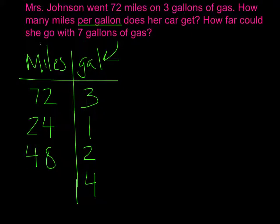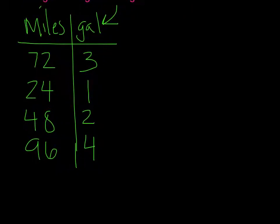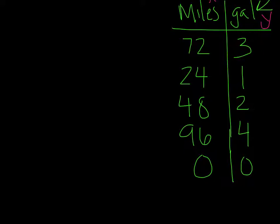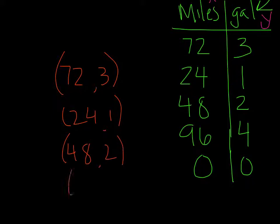Also keep in mind, if I haven't gone anywhere, I haven't used any gallons of gas, or if I haven't used any gallons of gas, I haven't gone anywhere, so I have a 0, 0. Now I'm going to go ahead and graph here, and I'm going to go ahead and make my first term x, my second term y. And as I go over here, I can quickly make these into ordered pairs. 72, 3, 24, 1, 48, 2, 96, 4, and 0, 0.